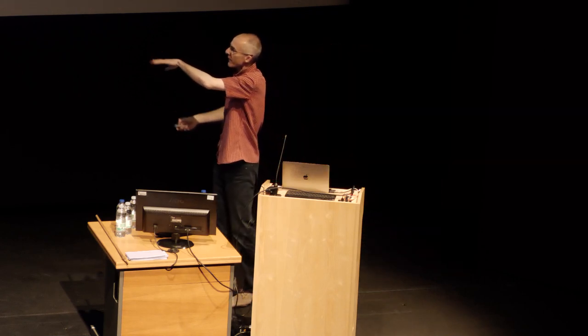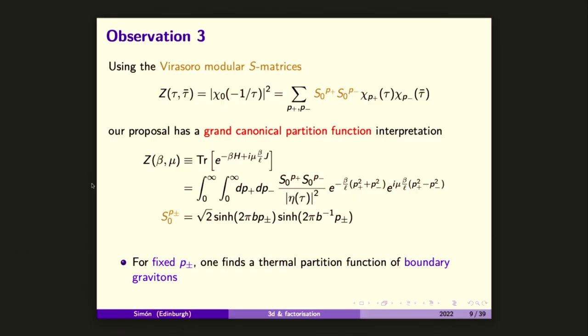The next observations are trying to extract some features that this hypothetical proposal satisfies — you decide whether you are convinced. Since we started with a 2D CFT using the Virasoro modular matrices, I can rewrite our proposal. This comes from the previous argument. And the observation — also well known — is that this partition function can be interpreted as a grand canonical partition function.